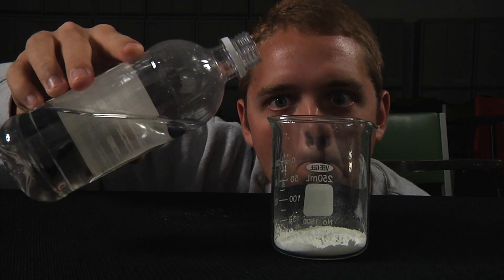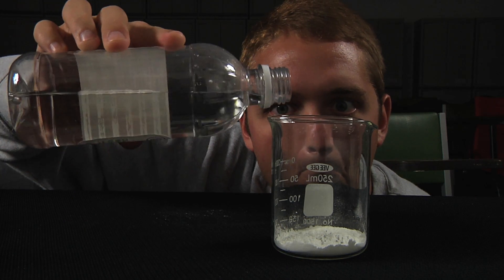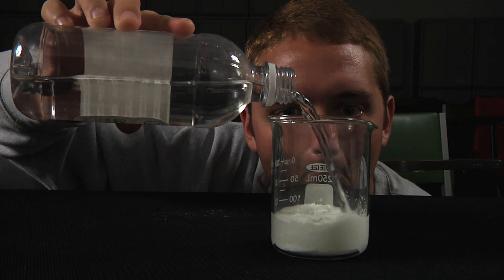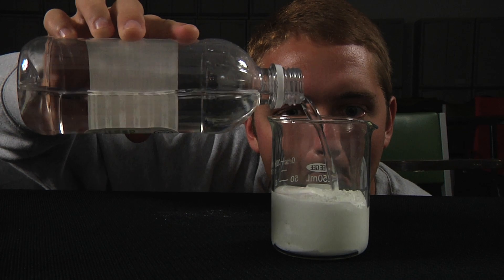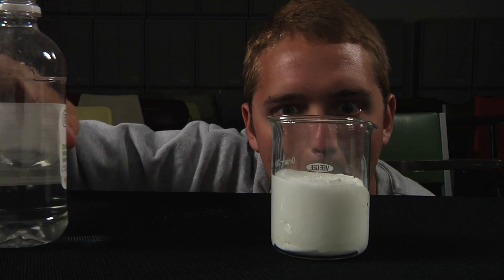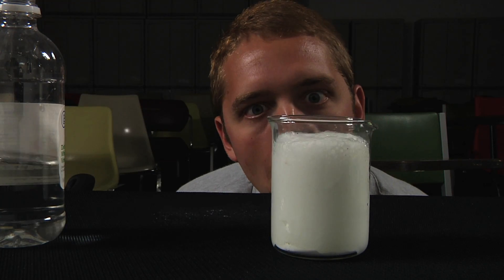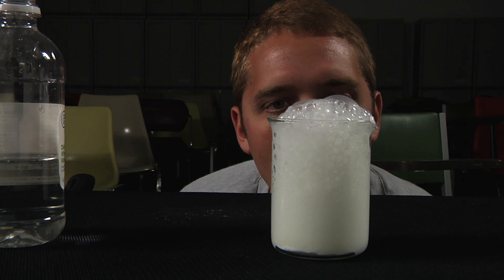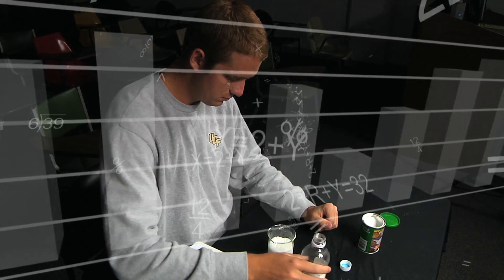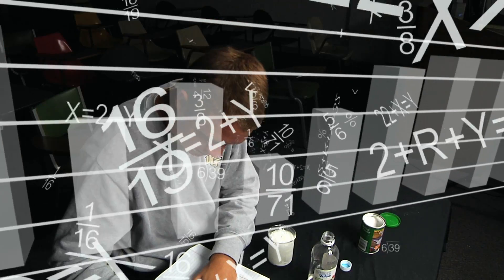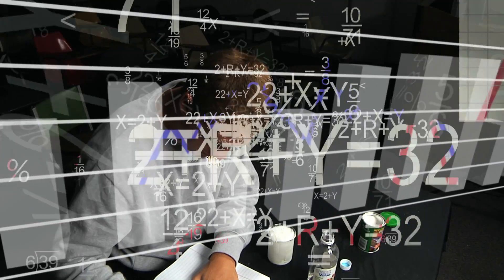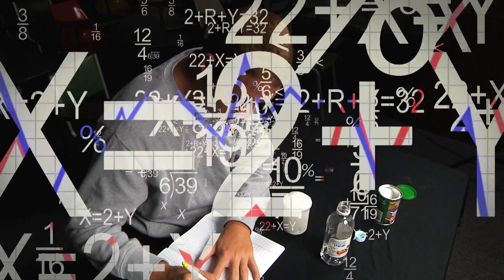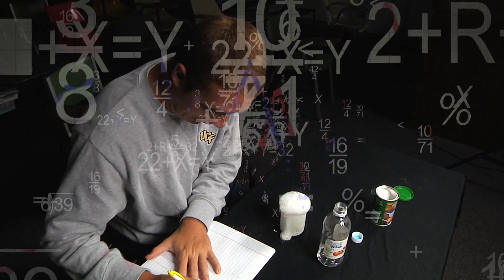Through experimentation, a hypothesis is tested and data is collected that either proves or disproves it. This data is analyzed and evaluated. Graphs and charts may be used to organize the data. Once the data is fully understood, an answer to the initial question can be derived.